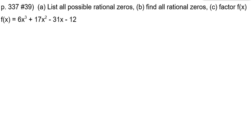We have a function f of x, and part A is to list all possible rational zeros. I usually say the word roots and the book says the word zeros, but it's the same thing. All possible rational zeros — that's what we call APRR, all possible rational roots.